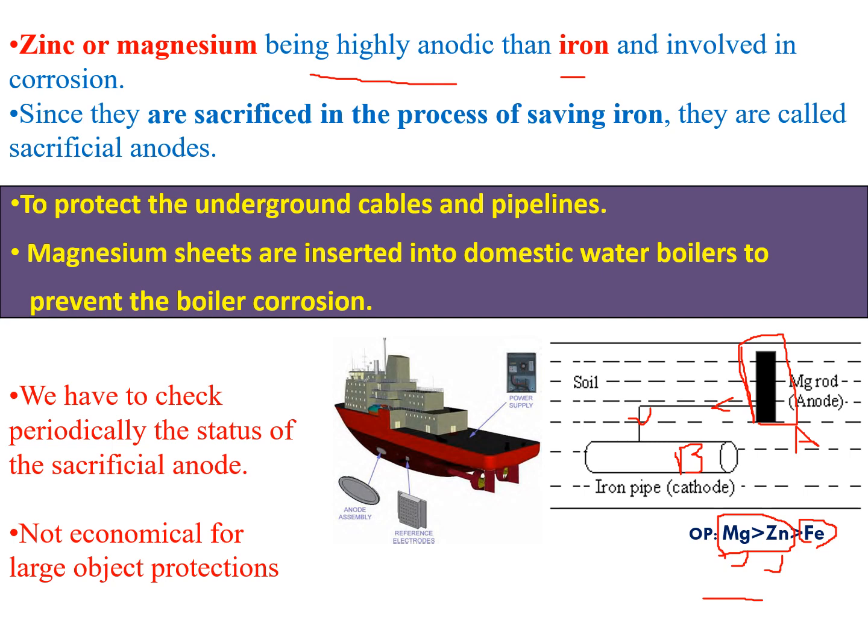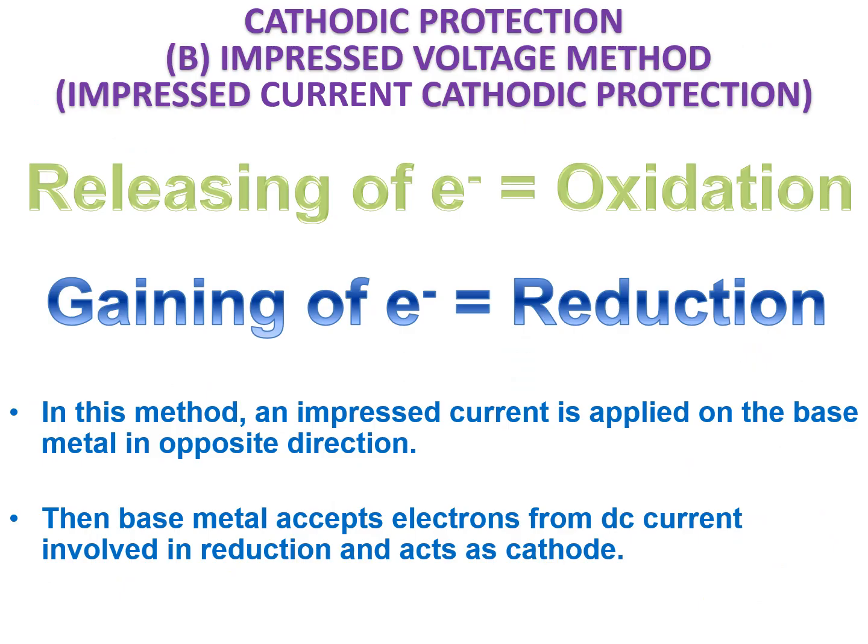If underground pipelines are damaged by corrosion, drinking water can be polluted or fuel can leak, leading to explosions. Because of this, cathodic protection of underground pipelines is very important. However, the sacrificial anodic method has two disadvantages. The next method is the impressed current cathodic protection, also known as the impressed voltage method.